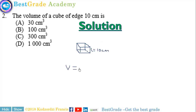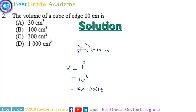For the volume of the cube, we have L cubed. And that will give us 10 cubed. This is the same as 10 times 10 times 10, which gives us 1000 cm cubed.